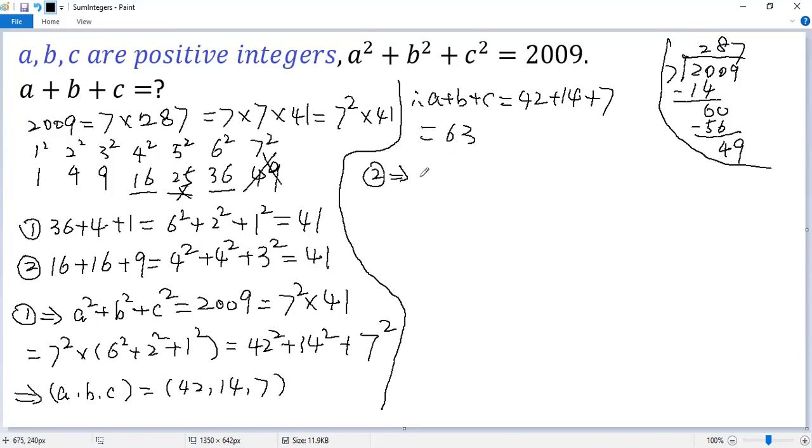For the second case, we get a² + b² + c² again equals 7² times 41. Now 41 can be expressed as 4² + 4² + 3². Again, distribute 7² to each term. So we get 7 times 4 = 28 squared,